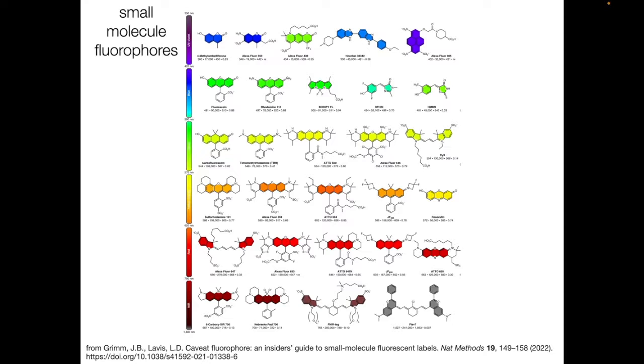Beyond the rings, there are a huge variety of different molecular structures here. These structure variations lead to different spectra, brightness, and other properties.